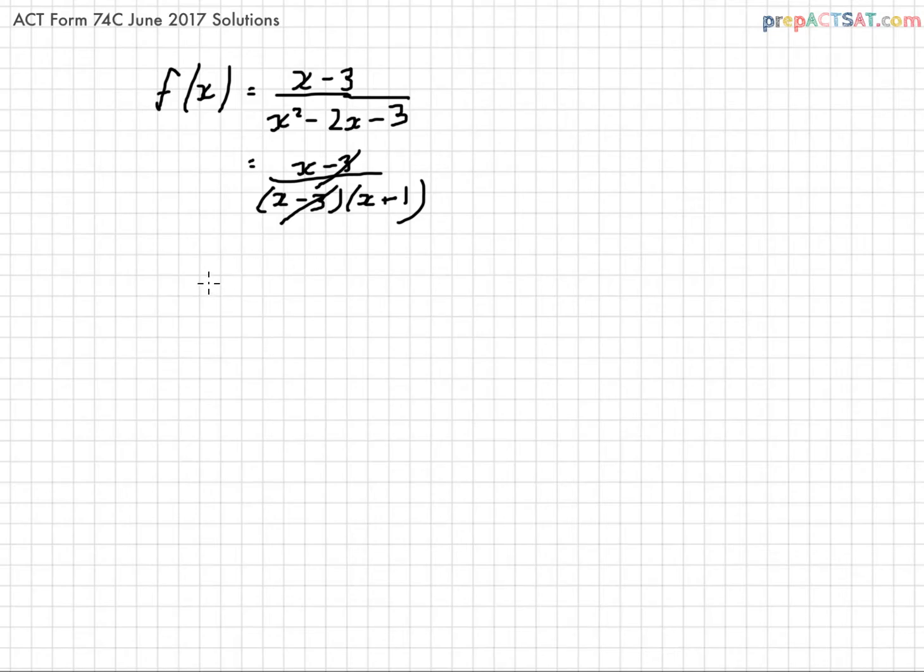Domain is all the allowed x values, so x cannot be 3. If it were 3, that would make the denominator 0. That's not allowed. It cannot be negative 1, because that's another value that would make the denominator 0. So that makes the answer J. Thank you.